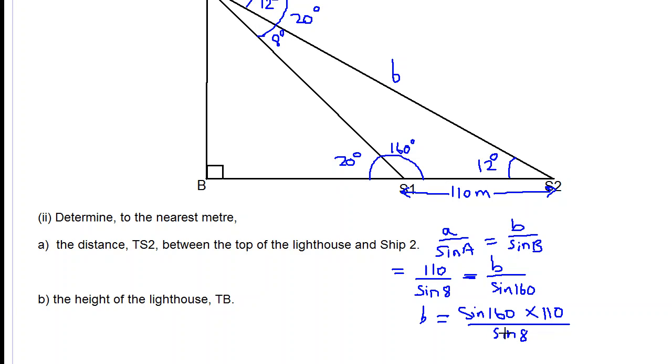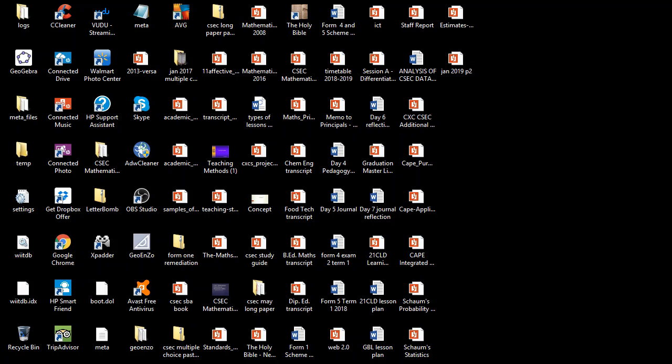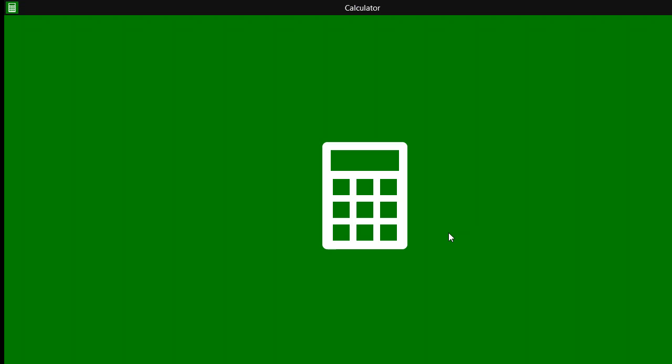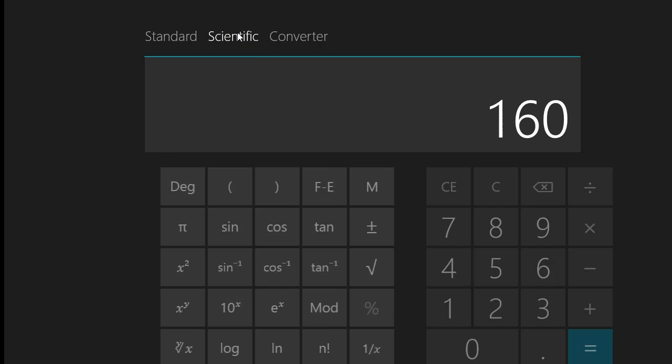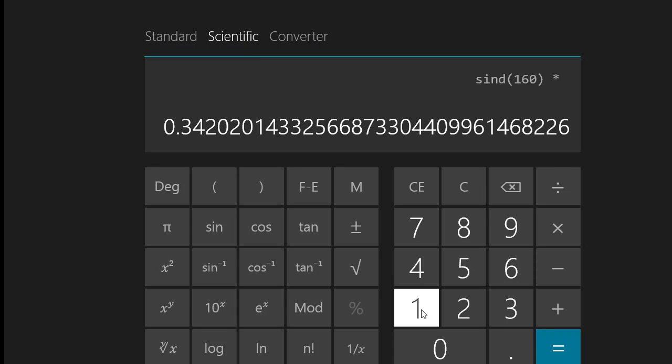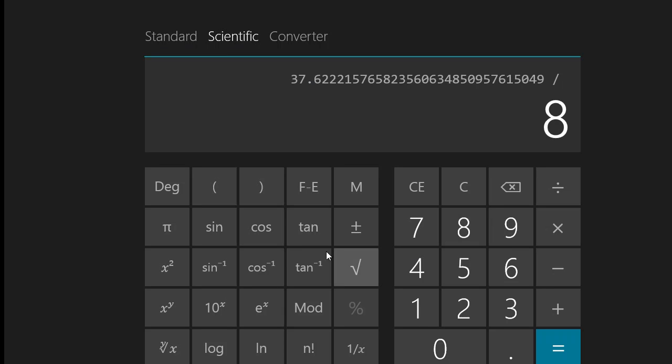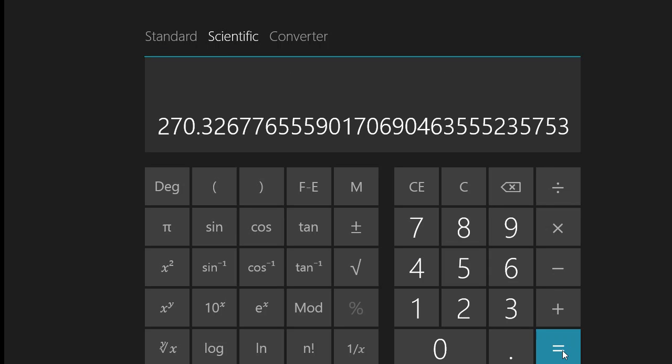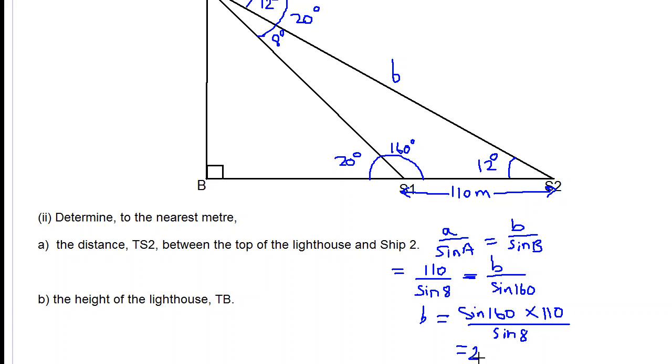So we use our calculators to look at this question. Sine 160 times 110 over sine 8. For scientific calculator, sine 160 times 110 divided by sine 8. And we get 270 meters to the nearest meter. The question wants us to determine to the nearest meter. So we get 270 meters.